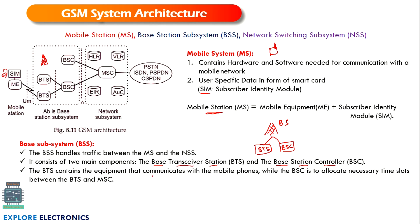The BTS consists of equipment that communicates with the mobile phone. Whatever signals are transmitted from the mobile phone are communicated through the BTS, since it has both a transmitter and receiver — combined as a transceiver. The BSC is the controlling device that allocates necessary time slots between the BTS and the MSC. The MSC is responsible for call establishment, call release, handoff, and related functions. The controlling function between BTS and MSC is handled by the BSC.